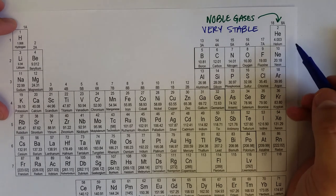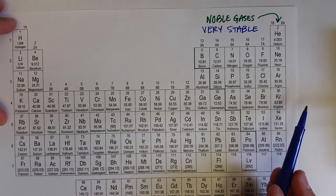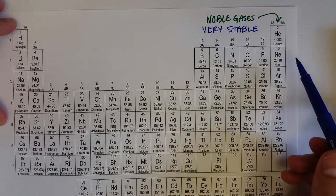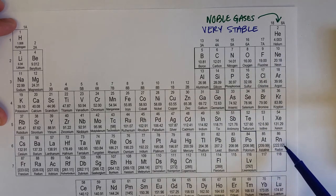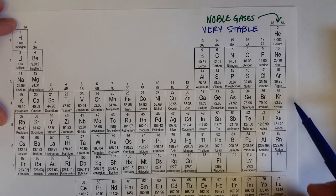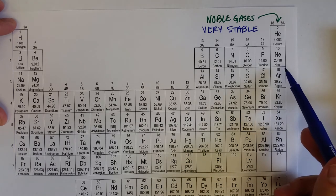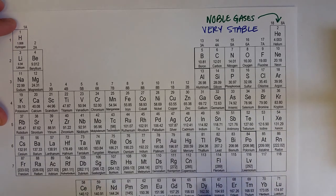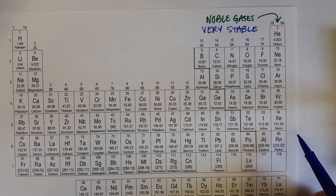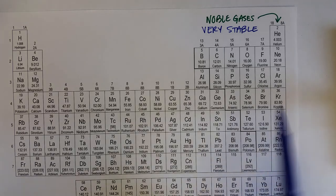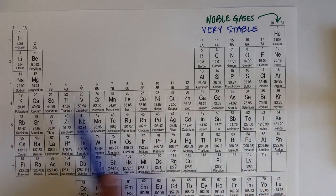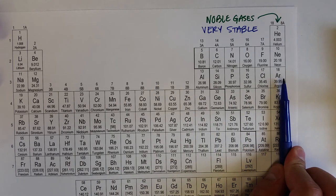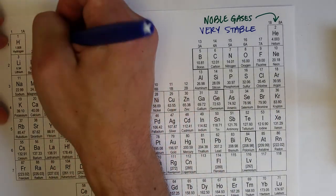And so what tends to happen with elements is that elements will react in a way to get the same number of valence electrons as their nearest noble gas element. And so, since neon, argon, krypton, xenon, and even radon have eight valence electrons, there is a very strong possibility that the elements will react in a way to get to those eight valence electrons. And that's what's known as the octet rule.